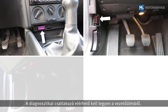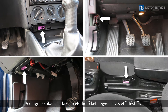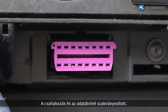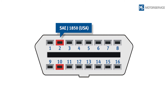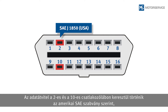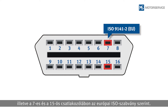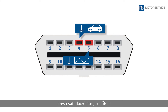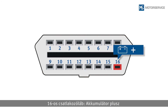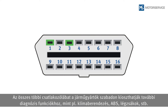The diagnostic connection must be accessible from the driver's seat. The connection and data transfer are standardized, meaning the plug assignment and transfer protocol are the same in all vehicles. Pins 2 and 10 are used for data transfer according to the American SAE standard, whereas pins 7 and 15 are used for the European ISO standard. Pins 6 and 14 are used to transmit the CAN data bus signal. Pin 4 is vehicle ground, pin 5 is signal ground, and pin 16 is the positive battery terminal. All other pins can be freely used by vehicle manufacturers for additional diagnostic functions, such as air conditioning, ABS, airbags, and so on.